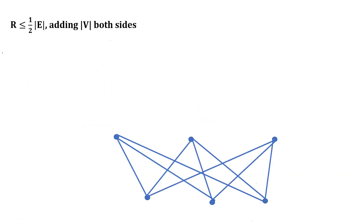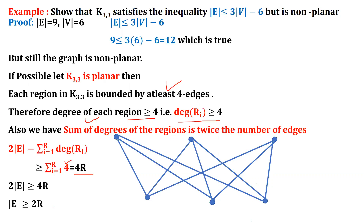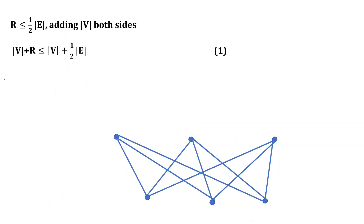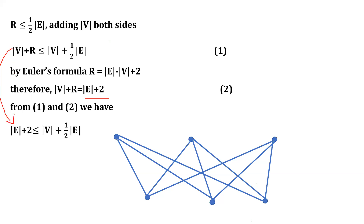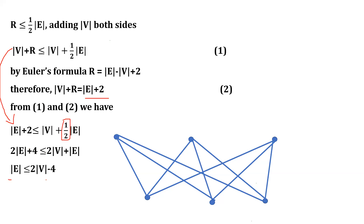From 2e ≥ 4r we get e ≥ 2r, or r ≤ e/2. Adding v to both sides: v + r ≤ v + e/2. By Euler's formula, v + r = e + 2, so e + 2 ≤ v + e/2. Multiplying through by 2: 2e + 4 ≤ 2v + e. Therefore we must have e ≤ 2v − 4.